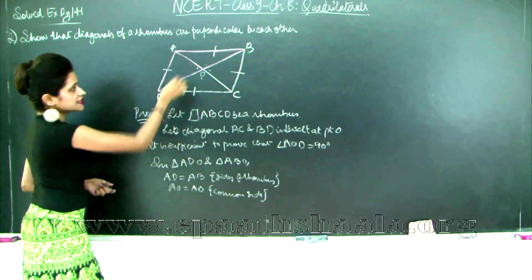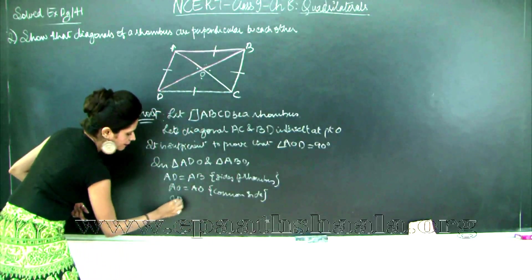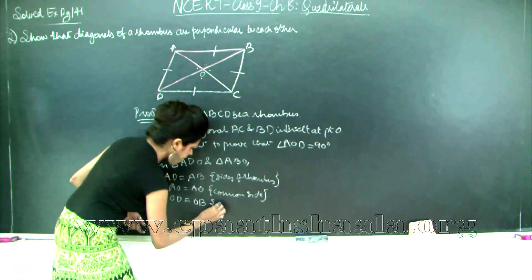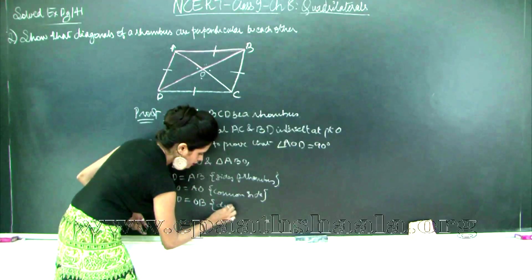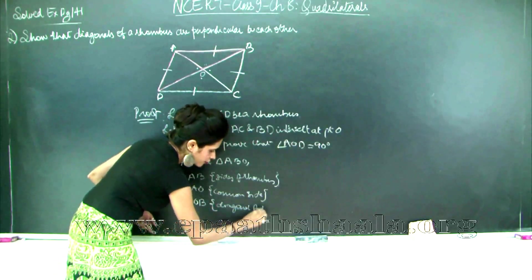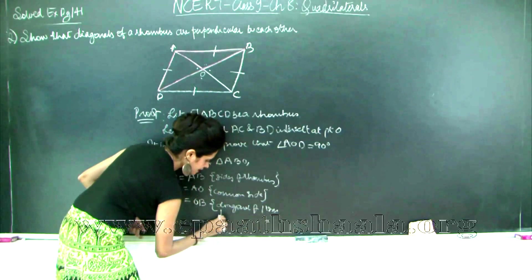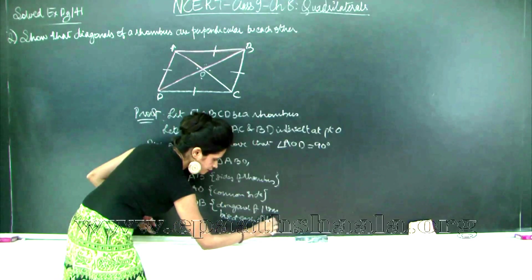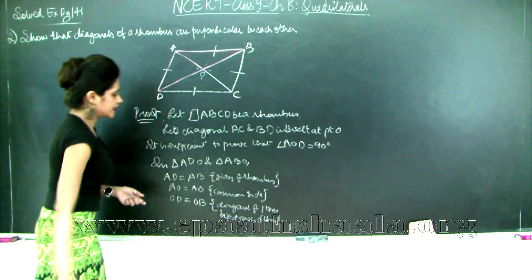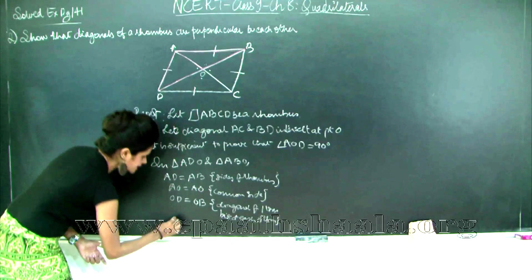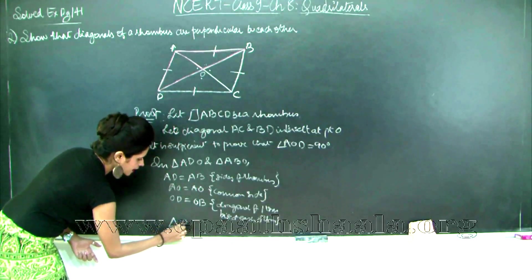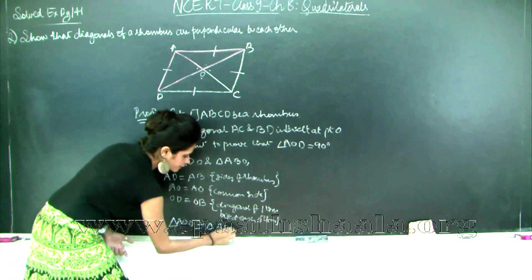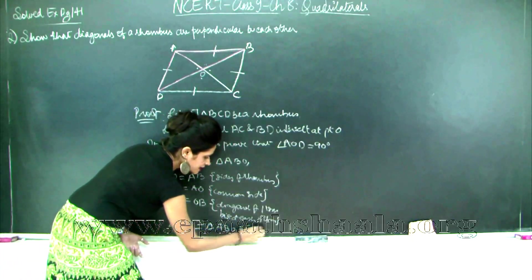Also, OD equals OB. Why? Because the diagonals of a parallelogram bisect each other. Therefore, by the SSS test of congruence, triangle ADO is congruent to triangle ABO.